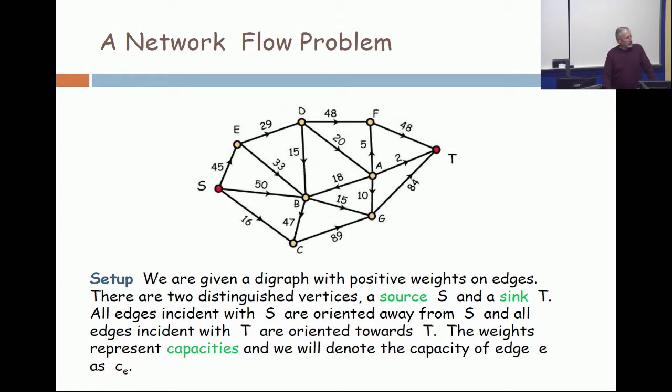So we want to start with the description of a network flow problem. We're going to go through this quickly because this is all stuff that we saw last time. You have a directed graph with distinguished vertices, a source denoted S, and a sink denoted T.